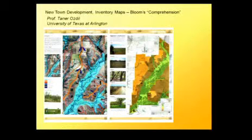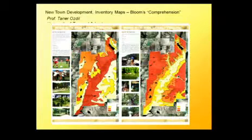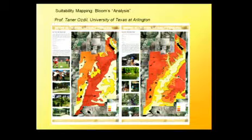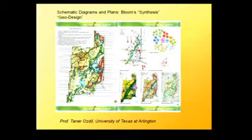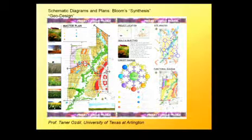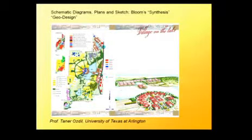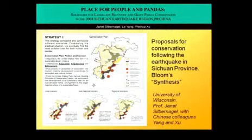This is a series of three projects with very straightforward inventory maps, site analysis — in this case suitability analysis — leading to the design diagrams based on these analyses, leading to a schematic plan. This is an example of Bloom's synthesis. And a third one with a 3D view, which we can now do digitally very effectively.